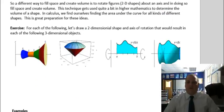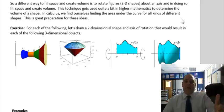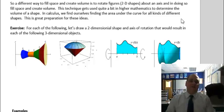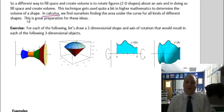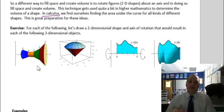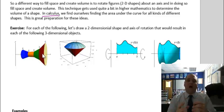So that's kind of what we're doing. A different way to fill space and create volume is to rotate 2D figures about an axis. The technique gets used quite a bit in higher math to determine the volume of a shape. In calculus, we find ourselves finding the area under a curve for all kinds of different shapes — this is great preparation for these ideas.